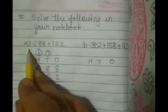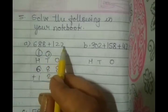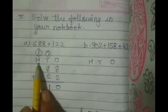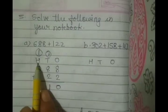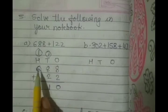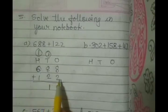Let's see here, first we have 688 plus 122. While writing in notebook you are going to make the columns like hundreds, tens and ones. Write down 688 plus 122.